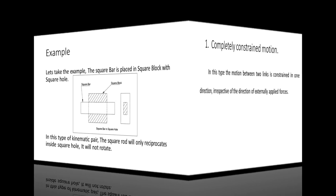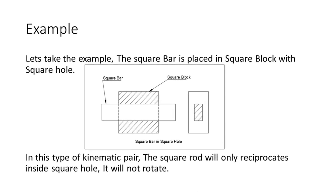Let's see the example. As shown in the diagram, the square block has a square hole, and a square bar is placed in that hole. In this example the square bar can reciprocate, but even after applying force to rotate it, it will not rotate. Now let's see the animated video.